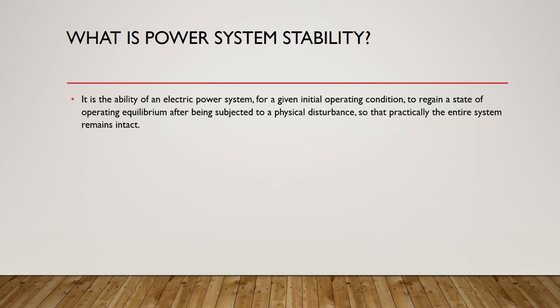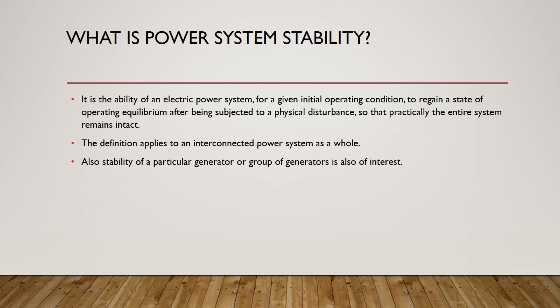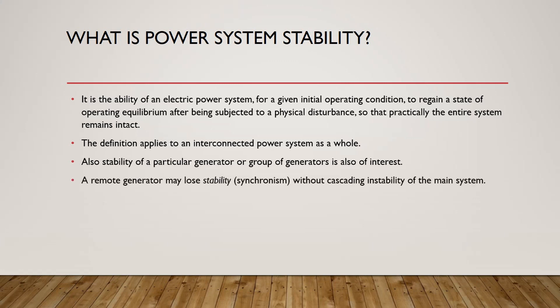The electrical power system has the ability to be in a steady state or equilibrium state after being subjected to these different types of disturbances. This definition applies to an interconnected power system as a whole — for example, a large group of generators connected together — and also to one particular generator. A generator may lose synchronism, meaning it is no longer synchronized with the power grid, yet our overall system can still be stable.